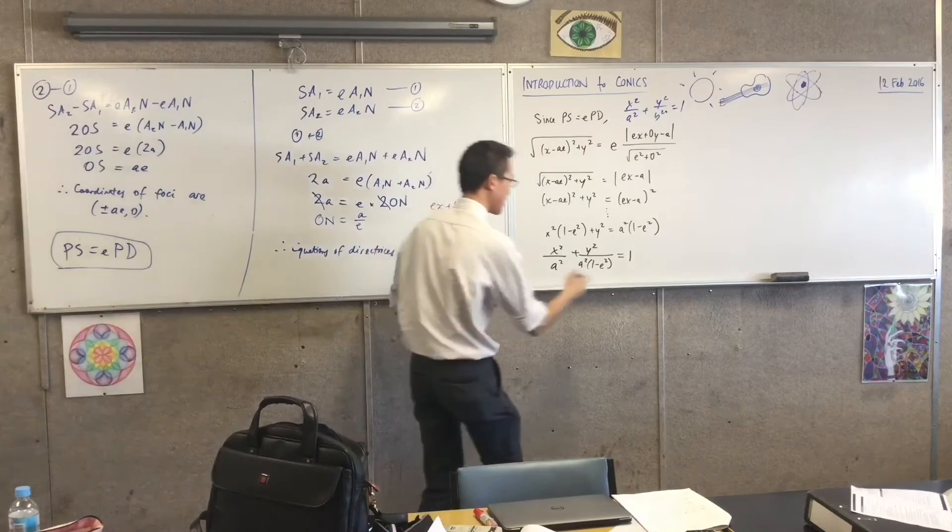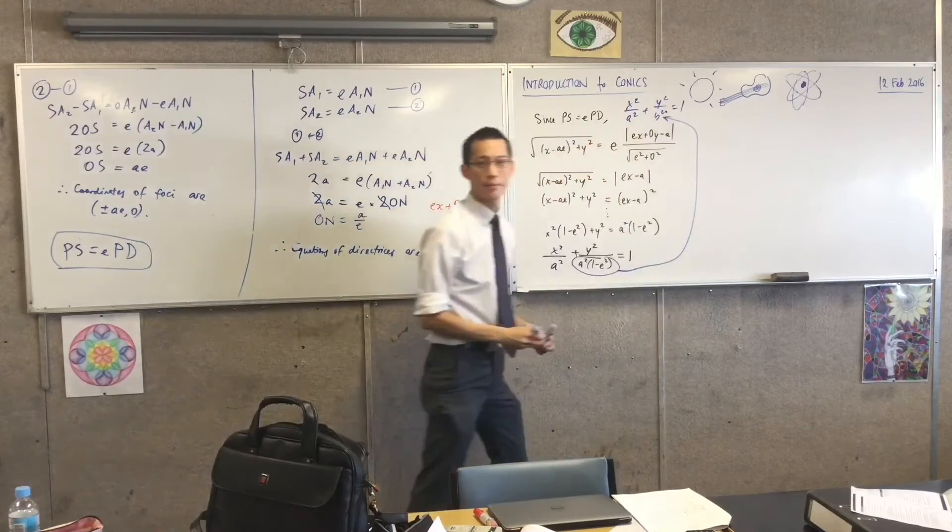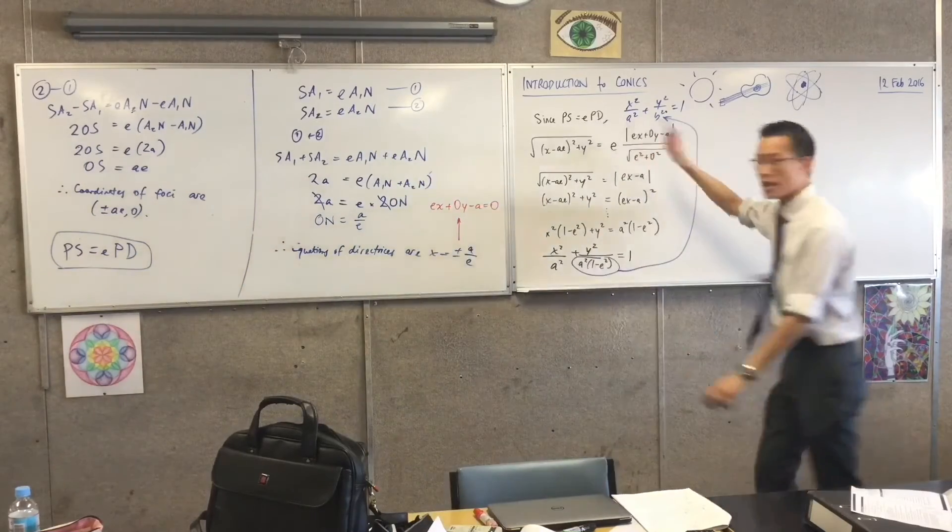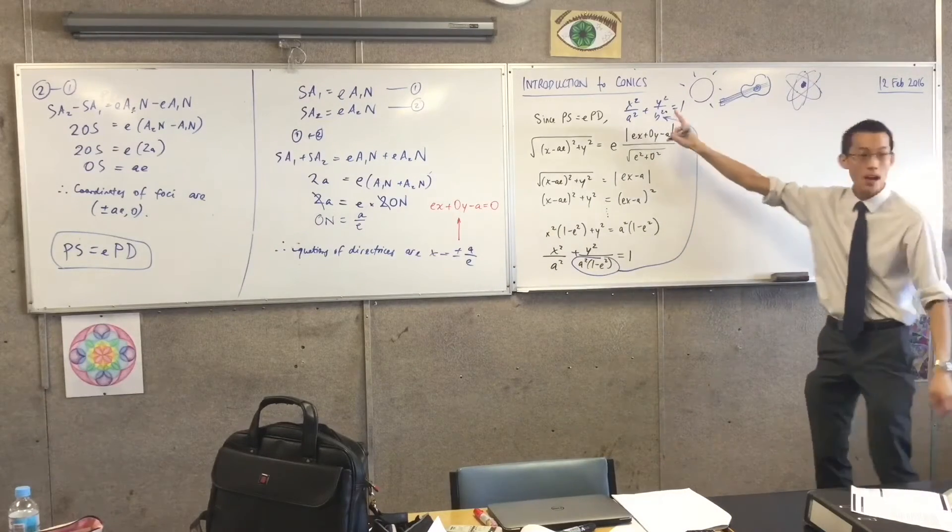We already know that this in fact should be b squared. So remember how we were trying to get a? Well, if you know a and b, there's a relationship between these three values, namely b squared.